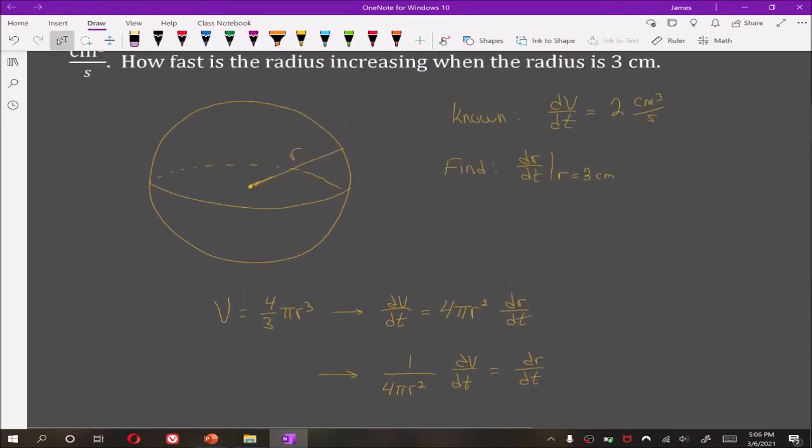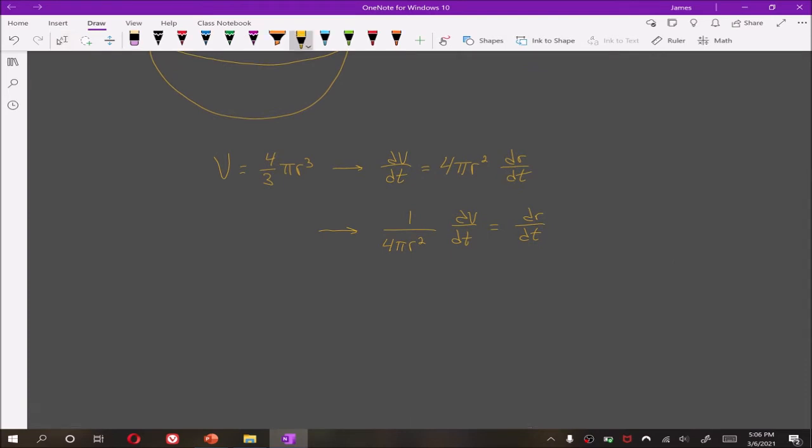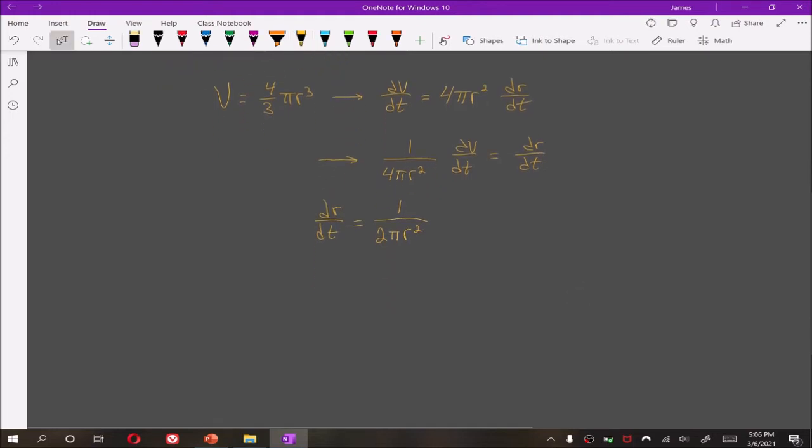But we also know that dV/dt is 2. So dr/dt is 1/(2π r²). We can now go ahead and answer the question, which was how quickly is the radius changing when it is 3 centimeters. So we want dr/dt evaluated when r is equal to 3.